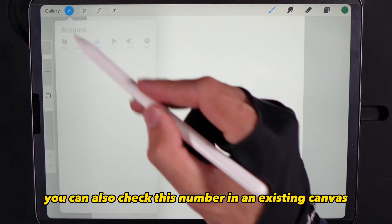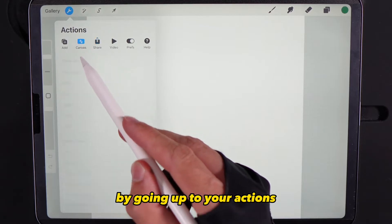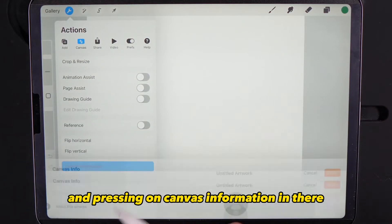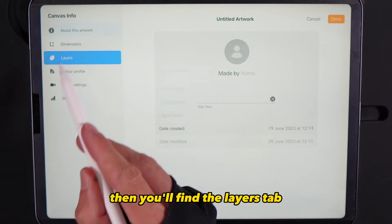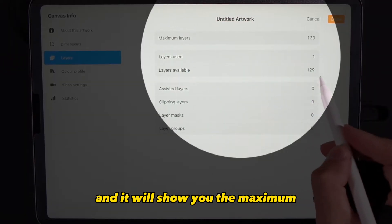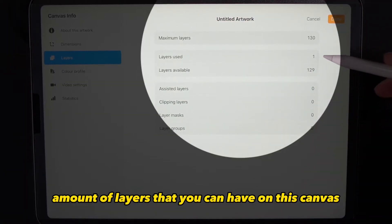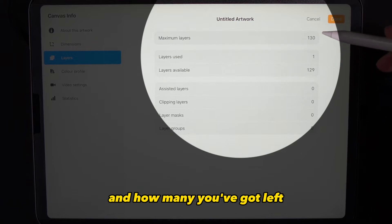You can also check this number in an existing canvas by going up to your actions, going to the canvas tab and pressing on canvas information. In there you'll find the layers tab and it will show you the maximum amount of layers that you can have on this canvas, how many you've used and how many you've got left.